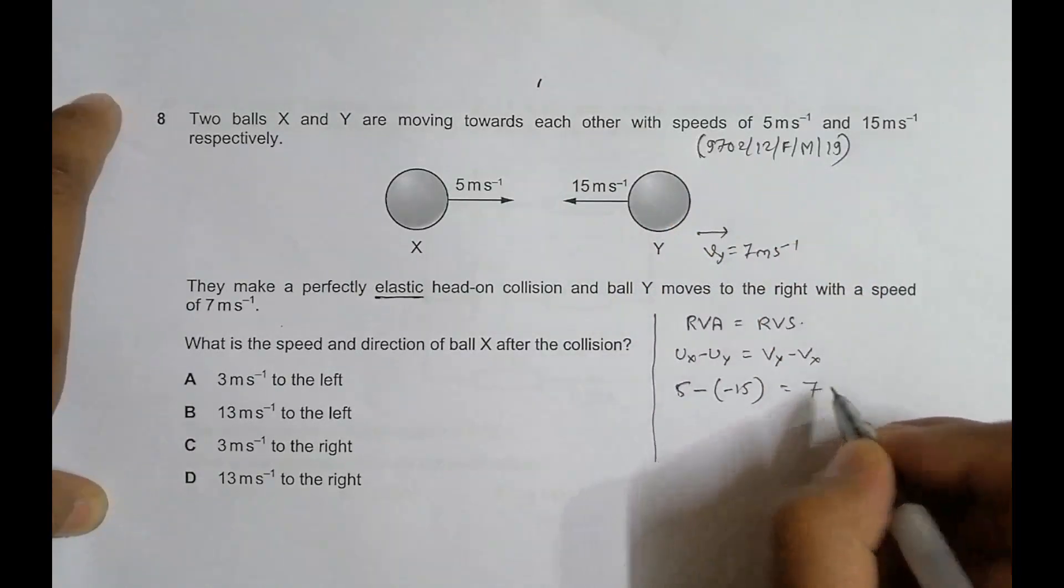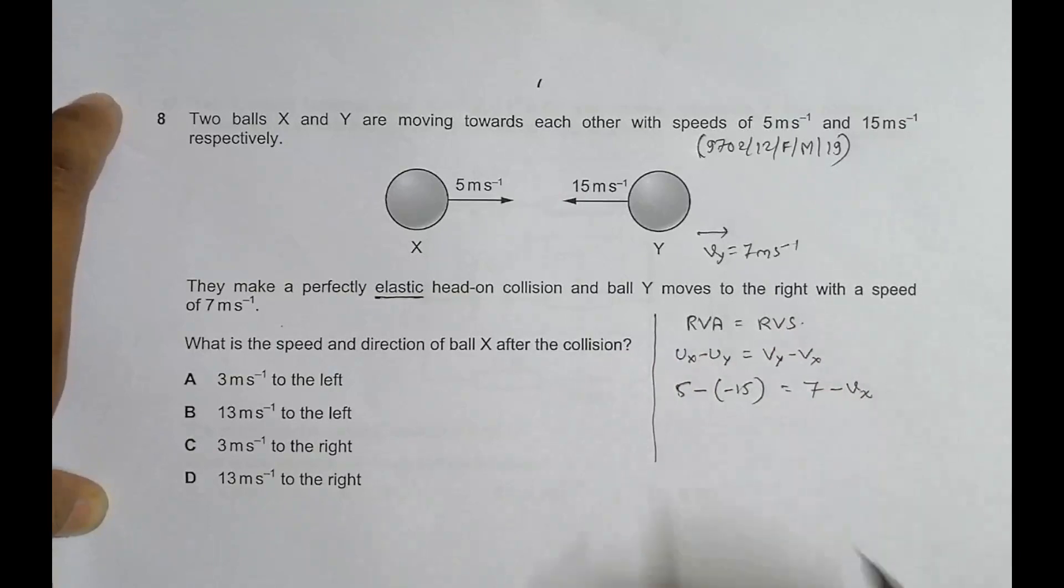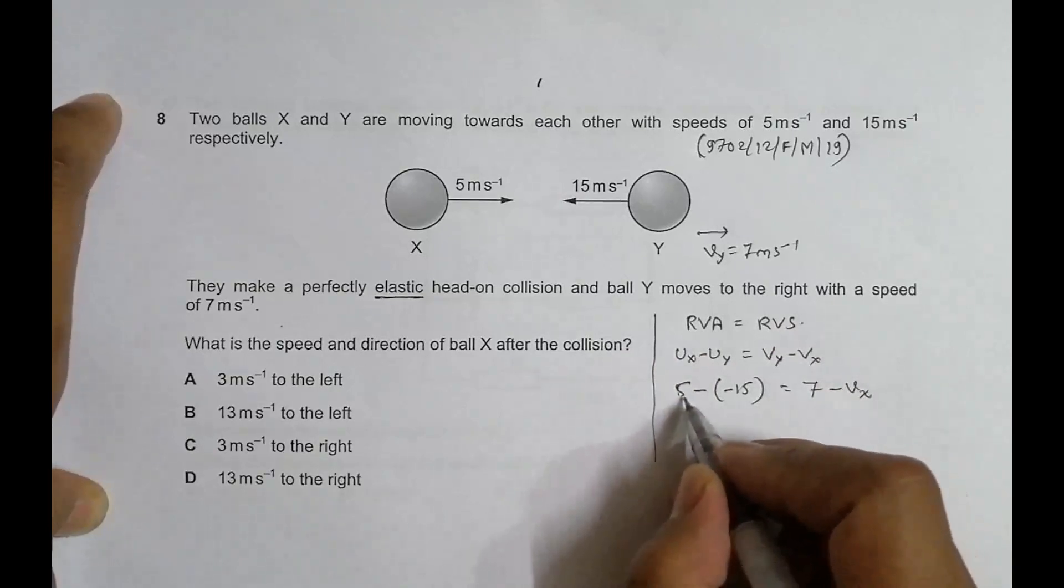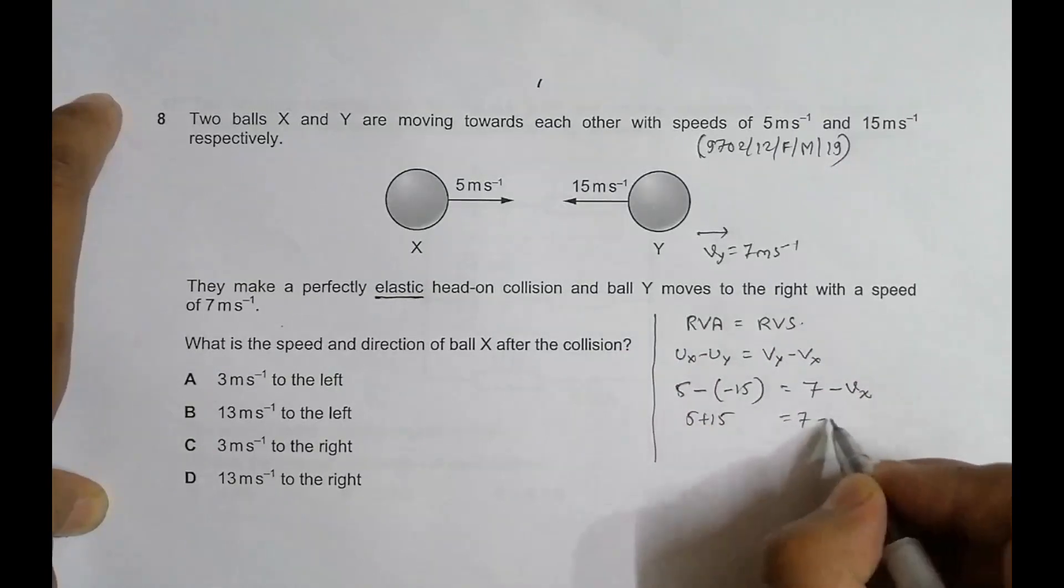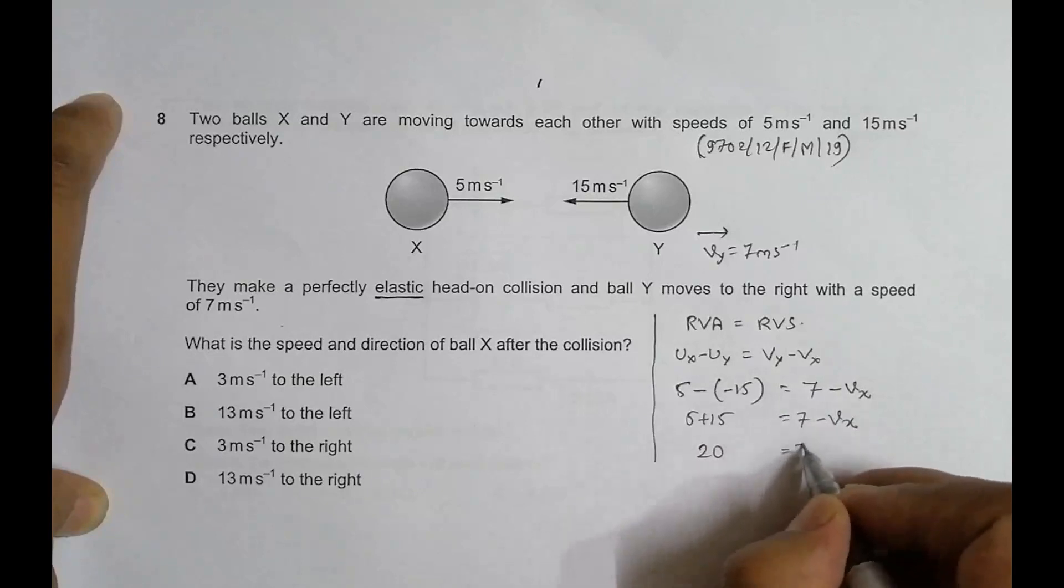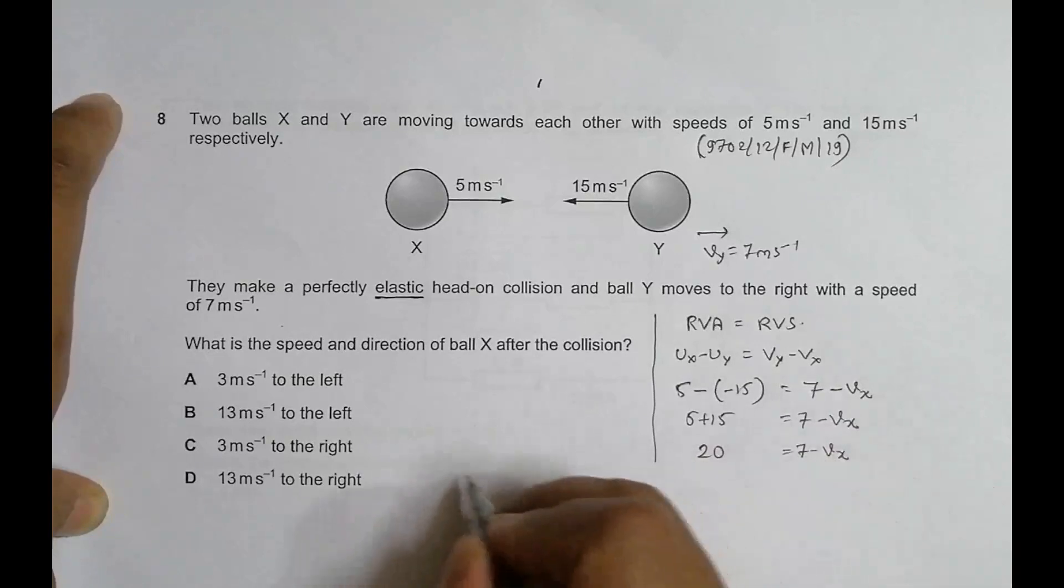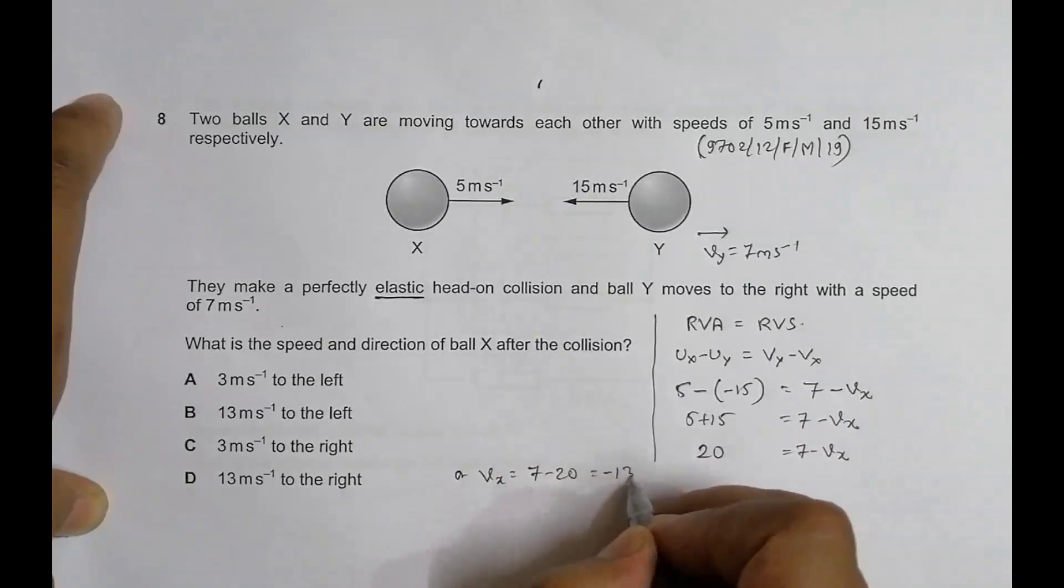So minus v_x. Let's do the mathematics: 5 plus 15 equals 7 minus v_x, which gives us 20 equals 7 minus v_x. This gives us v_x equals 7 minus 20, which equals minus 13 meters per second.